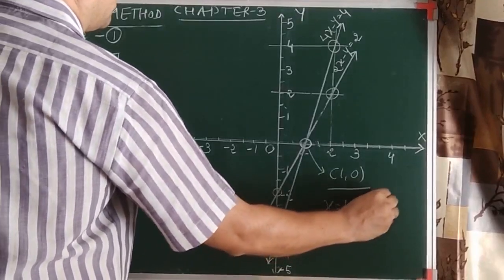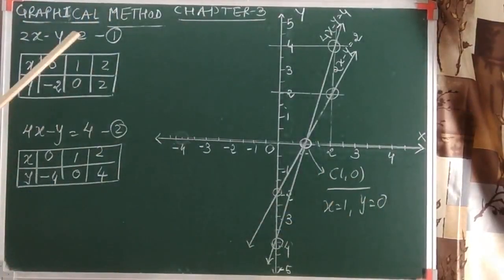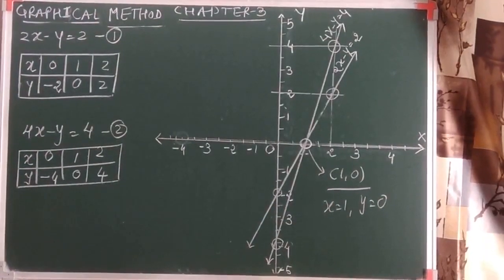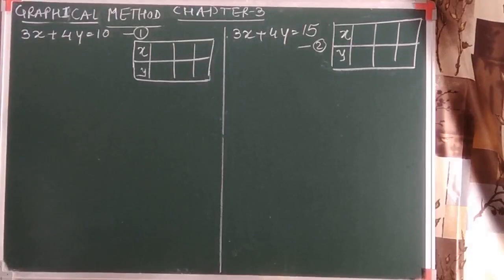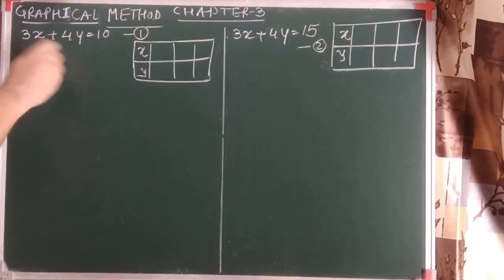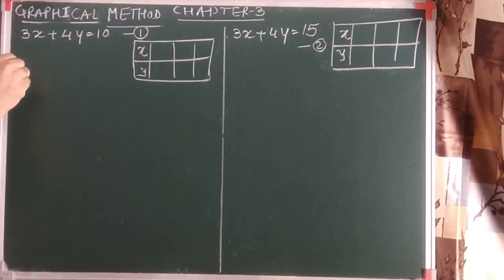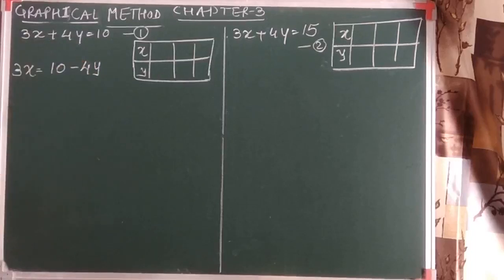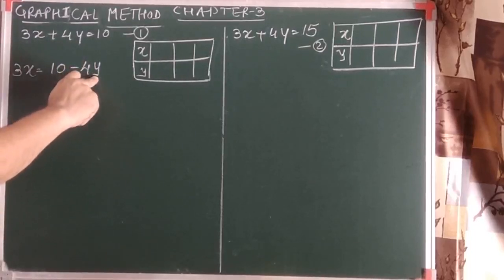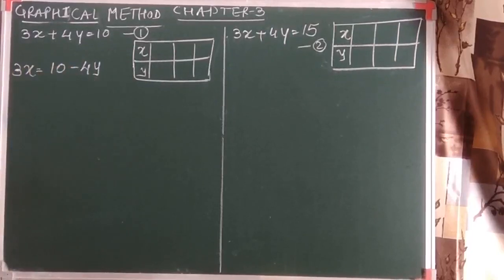Looking at both lines on the graph, we can see they intersect at the point (1, 0). So the solution is x equals 1 and y equals 0 — this is the solution of this pair of linear equations in two variables. Now let's see one more question solved by the graphical method. We need to make one variable the subject. If we take y equals 0 and solve, we get x equals 10 by 3, which is not easy to represent on a graph.